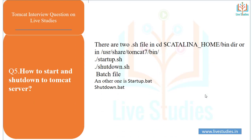Another question: how do you start and shut down Tomcat? You can use the startup.sh file from the Catalina home binary directory — for example, /usr/share/tomcat/bin/startup.sh and shutdown.sh. On Windows, the batch files startup.bat and shutdown.bat are used.